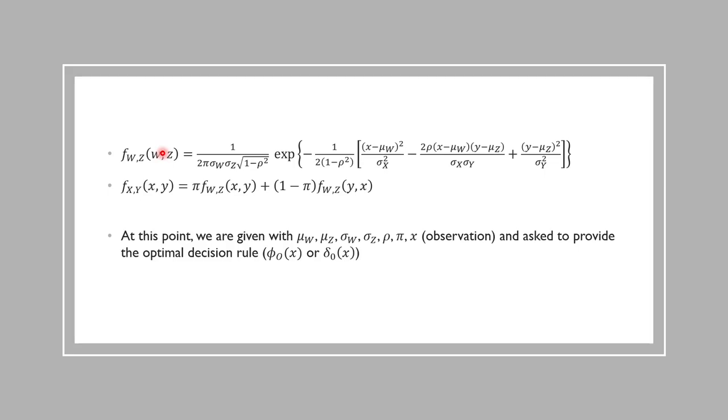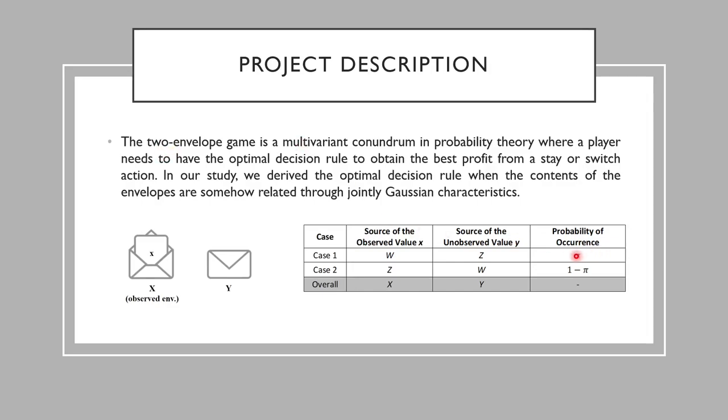Here, we model your behavior mathematically. You are going to pick the envelope that contains the sample of omega with probability pi or the envelope that contains the sample of z with probability 1 minus pi. After picking an envelope and observing the value written in it, you have two options. You can either stick with your first observation or you can switch to the other envelope and be with the value written in it.